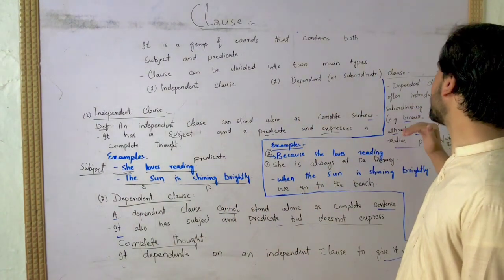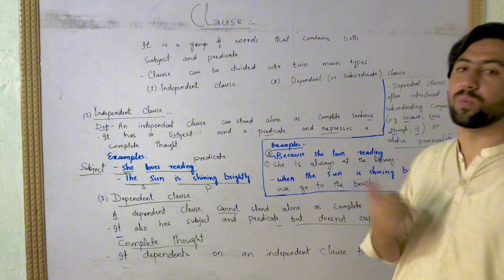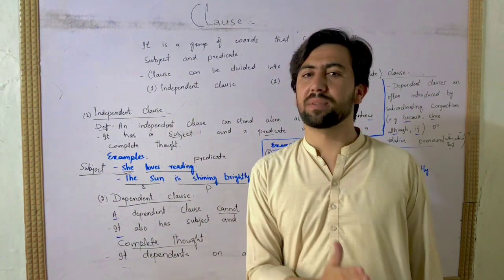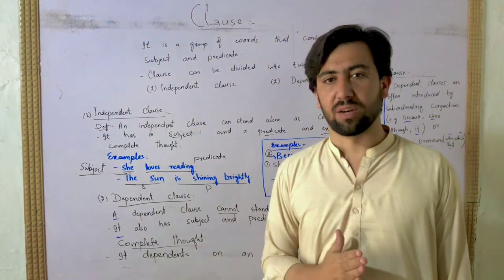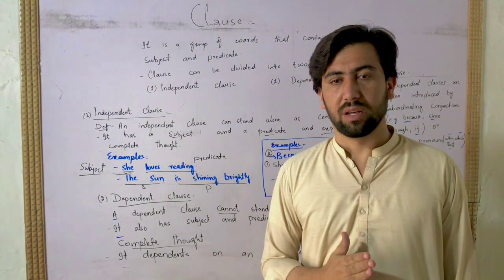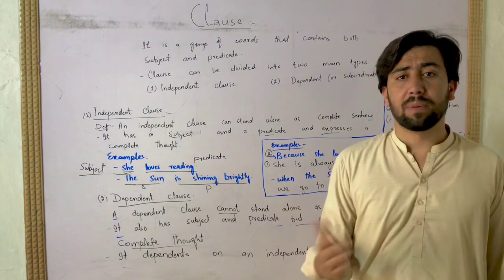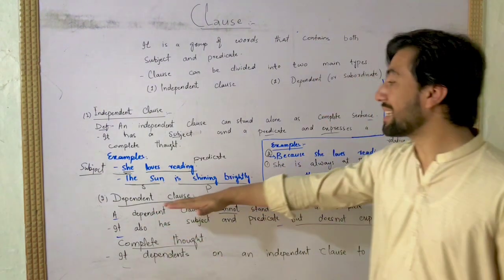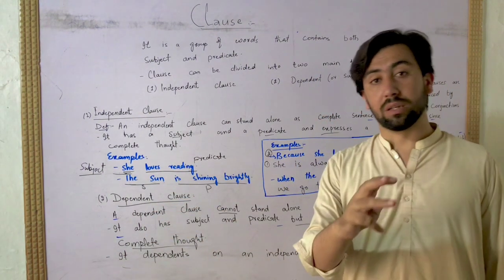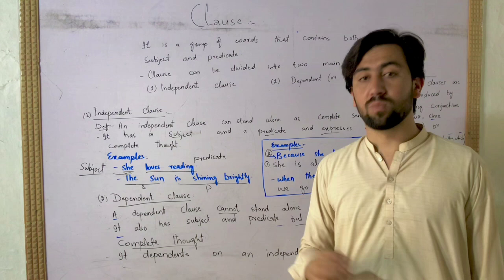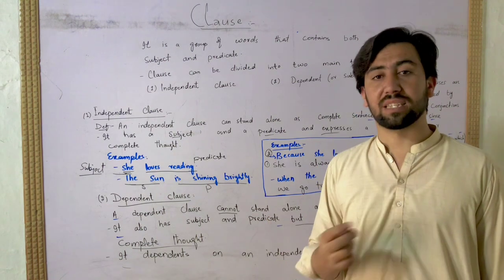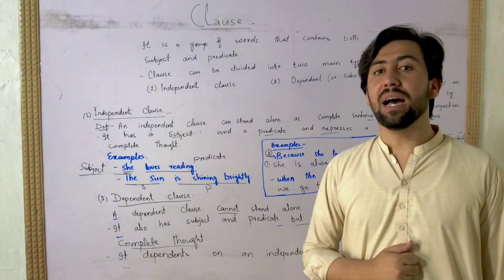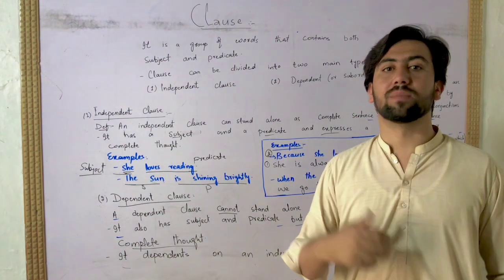A dependent clause is introduced by a subordinating conjunction or relative pronoun. This is the first lesson on independent and dependent clauses. In this class, we will have three important subjects coming up: adjective clause, adverb clause, and noun clause. We will be able to discuss the details and information in those topics.